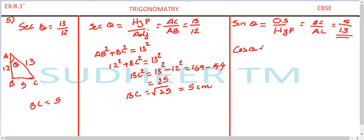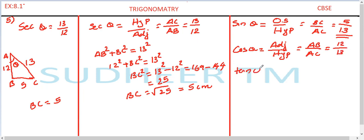Second, cos theta: definition is adjacent side divided by hypotenuse, which is AB divided by AC, giving 12 divided by 13. Next, tan theta: opposite side divided by adjacent side, which is BC divided by AB — that is 5 divided by 12.